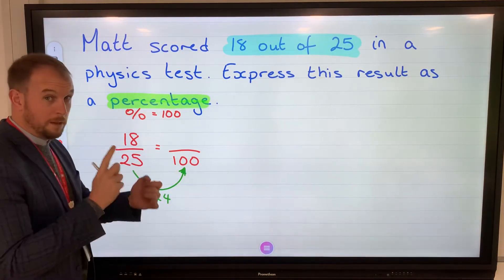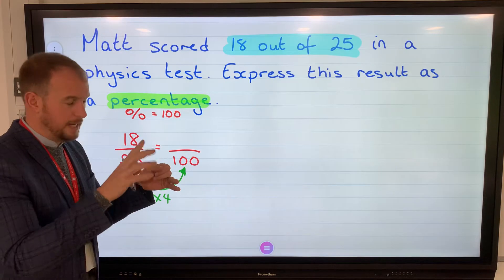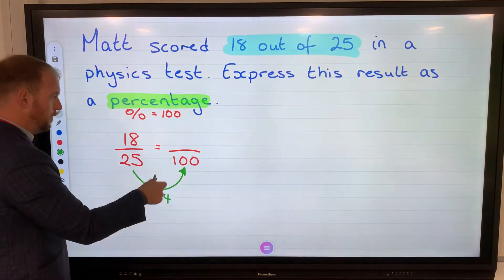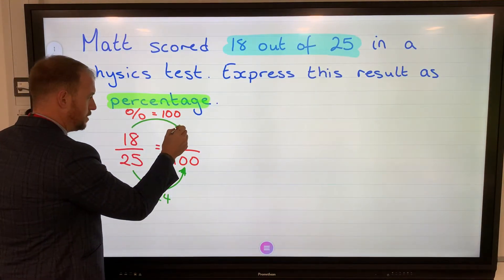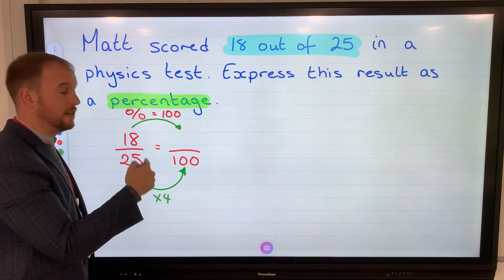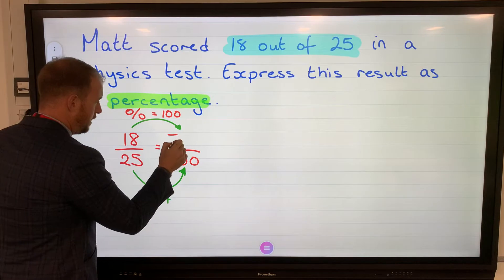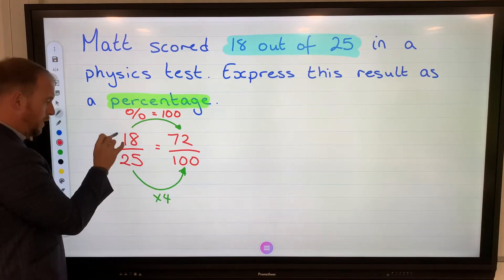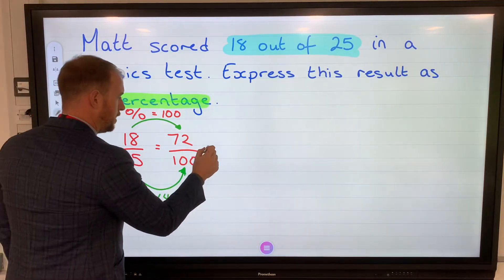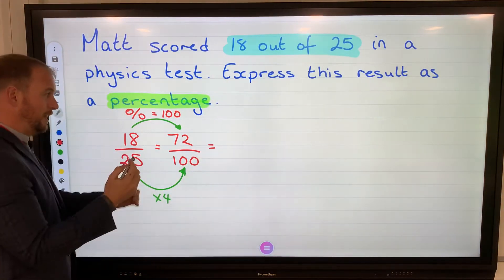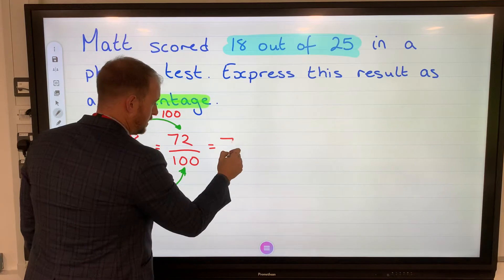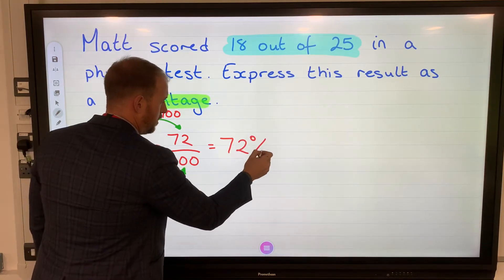With equivalent fractions, it's always multiply or divide, never add or takeaway. Find this relationship by multiplying by 4. Whenever you do to the bottom, we've got to do the same to the top. 18 times 4, well, 18 doubled is 36, doubled that to make 72. Therefore, 18 out of 25 is equal to 72 out of 100. Now, when it's out of 100, that means we can now work out a percentage very easily. 72 out of 100 is 72%.